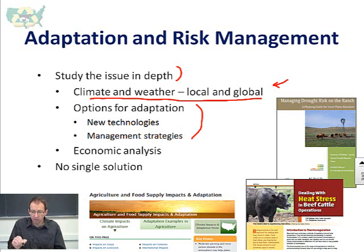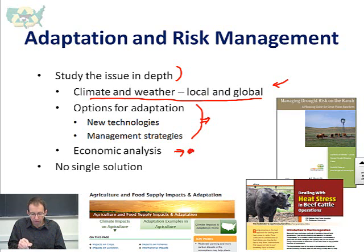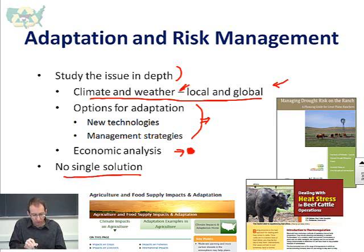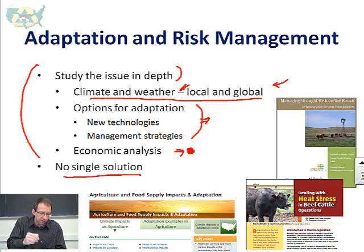There will be several options listed in the additional readings for this lesson, but know that it's a continual process of looking for new technologies and management strategies. The complexity of economic analysis will become more important — looking at risk management and cost-benefit analysis of adaptation technologies. Things that were not cost effective in the past might now be cost effective depending on climate changes. There is no single solution and no one size fits all — every farm and every geographic area is different.